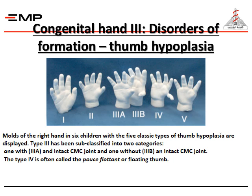Congenital hand disorders of formation — the most common is thumb hypoplasia. This photo shows models of the right hand in six children displaying the five classic types of thumb hypoplasia. Type three has been subclassified into two categories, three-A and three-B. Type four is often called the pouce flottant or floating thumb.